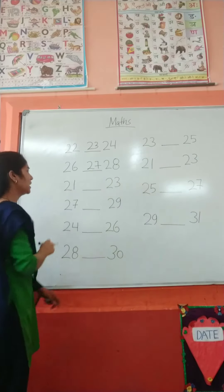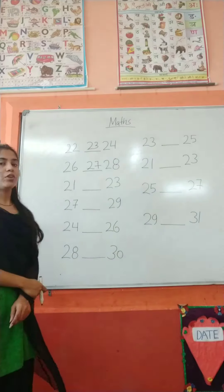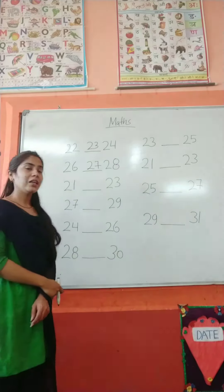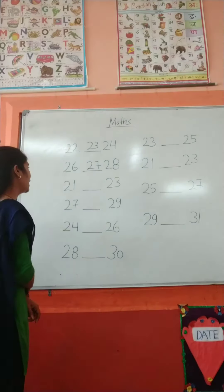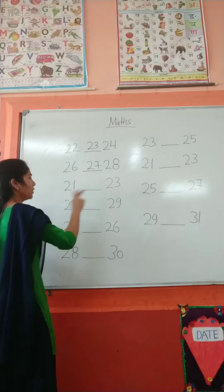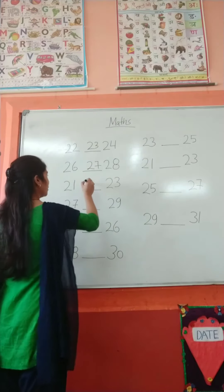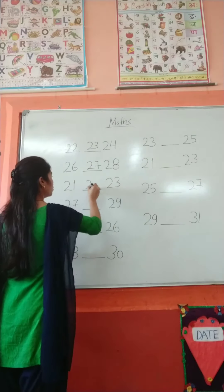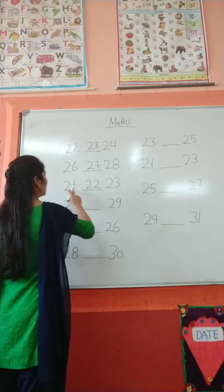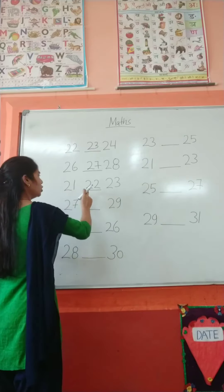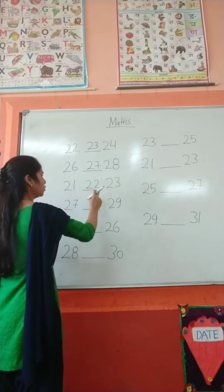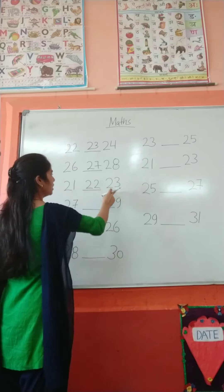And here is number 21. Which number comes between? Between means which number? 22. So: 22, 23.